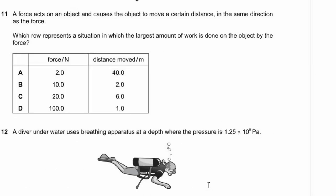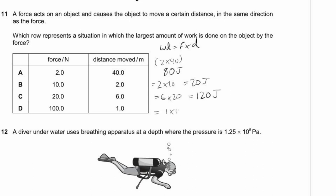Question 11. A force acts on an object causing it to move in the same direction as the force. Which row gives the largest amount of work done? Work done = force × distance. Checking each option: 2×40 = 80 J; 2×10 = 20 J; 6×20 = 120 J; 1×100 = 100 J. The largest is 120 J. Answer C.